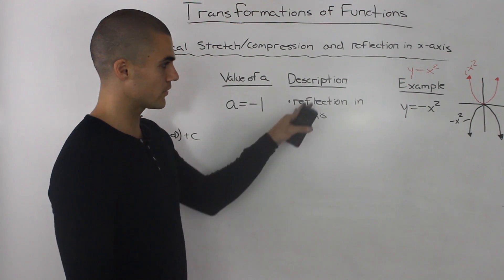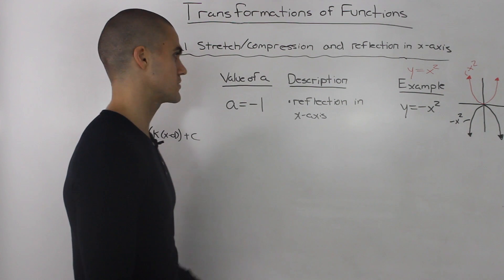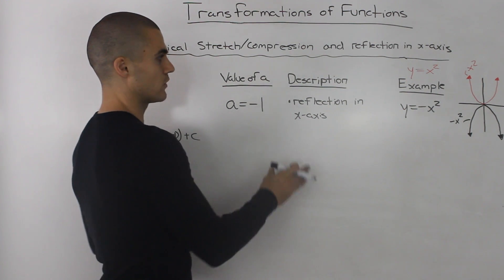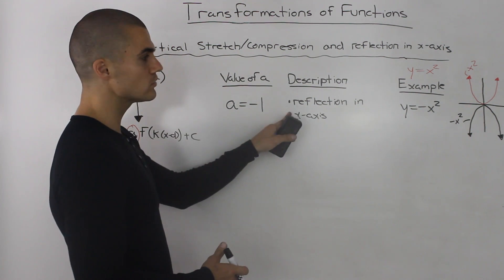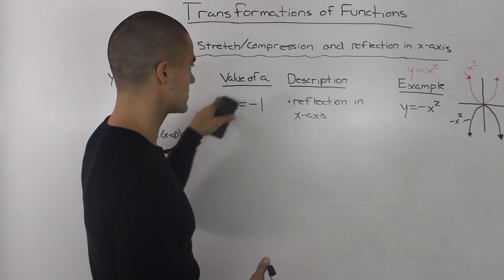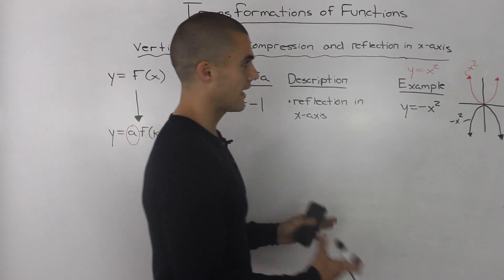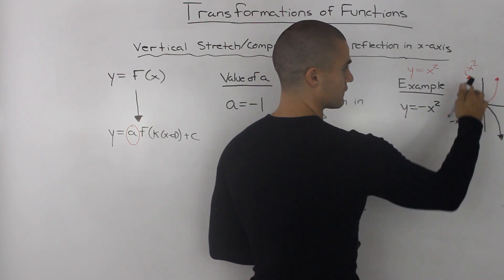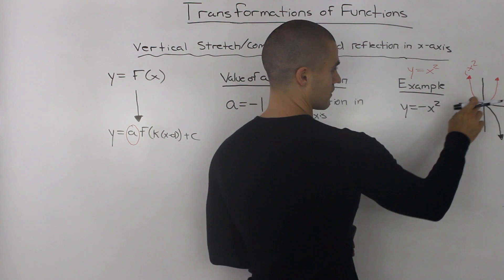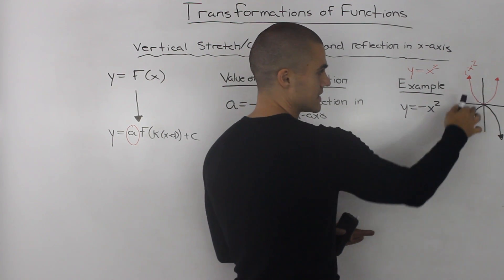The next case is when a equals -1. If a is -1, there is neither a vertical stretch nor compression — there is only a reflection in the x-axis. The corresponding function would be y = -x² (or y = -1·x²), with a value of -1. Graphically, the red parabola is our parent function x², and the transformed function -x² is identical in width but reflected in the x-axis, pointing downward.